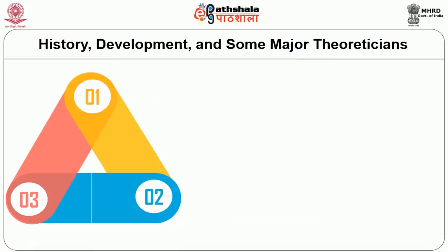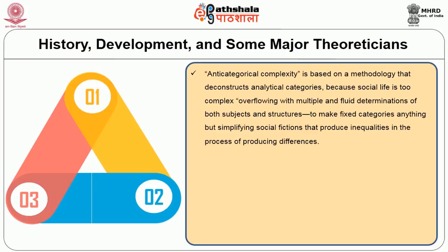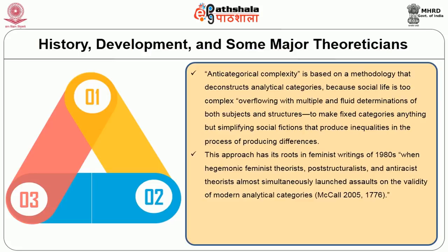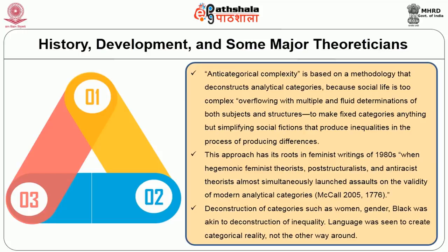McCall has delineated three approaches to address the method of intersectionality. The first, anticategorical complexity, is based on a methodology that deconstructs analytical categories because social life is too complex, overflowing with multiple fluid determinations of both subjects and structures. This approach has its roots in feminist writings of the 1980s when hegemonic feminist theorists, post-structuralists, and anti-racialist theorists simultaneously launched assaults on the validity of modern analytical categories. Deconstruction of categories such as women, gender, and black was akin to deconstruction of inequality.